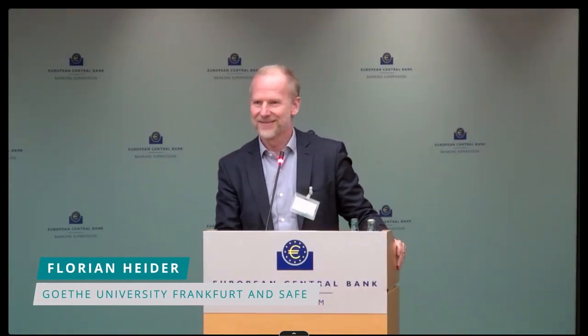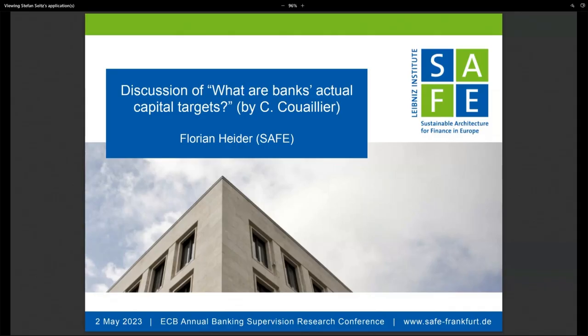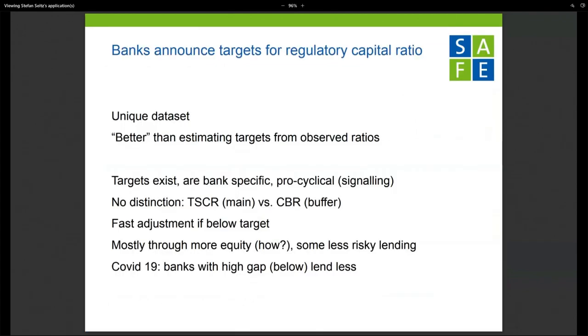Thanks a lot, Cyril. The discussant is Florian Haider from Goethe University, Frankfurt. The headline is that Cyril uses this new, amazing hand-collected data — looking at what banks tell regulators, markets, and other banks about what they think is the target for their regulatory capital. This is truly an amazing novelty. The paper also argues that these targets could be inferred from observed data, but it's much better to listen to what banks tell you than to figure out what they do.